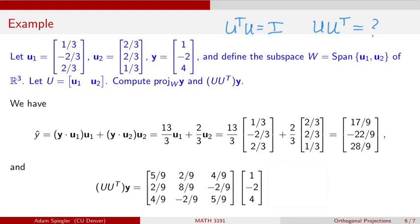This is done in the Colab notebook and was also done in a previous video. I take this 3 by 3 matrix, U times U transpose, and I'm going to multiply the vector y that we were given, which was 1, minus 2, 4. When I take the product, I get exactly the projection of y onto the subspace W. I get the vector 17 ninths, minus 22 ninths, and 28 ninths.